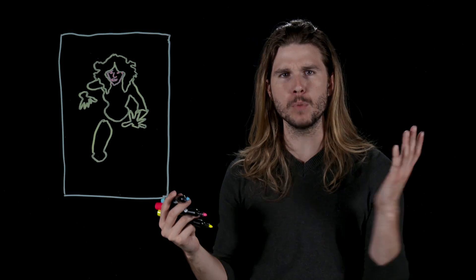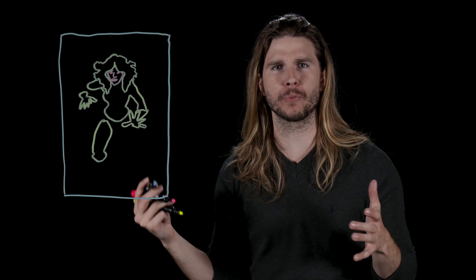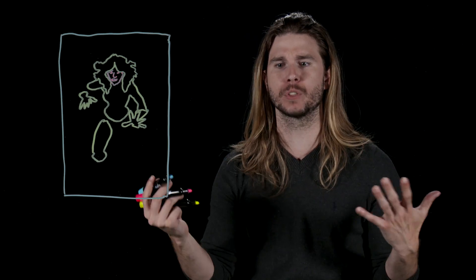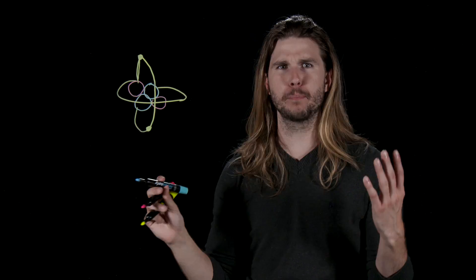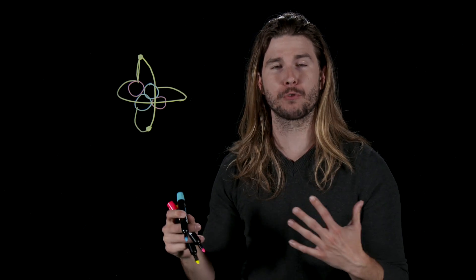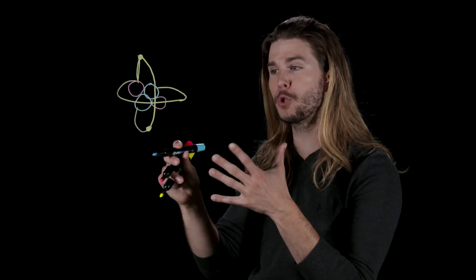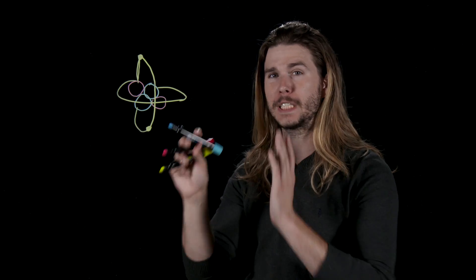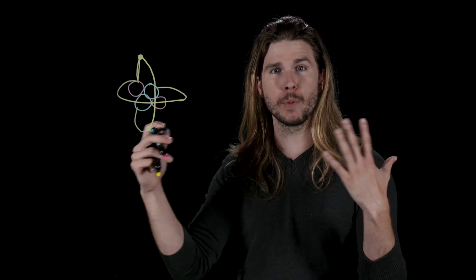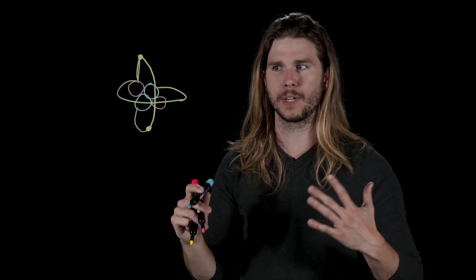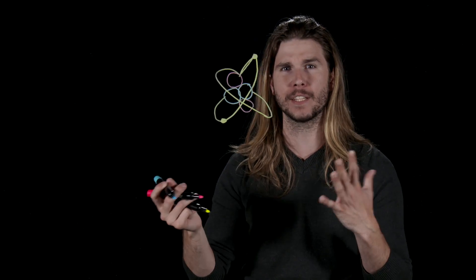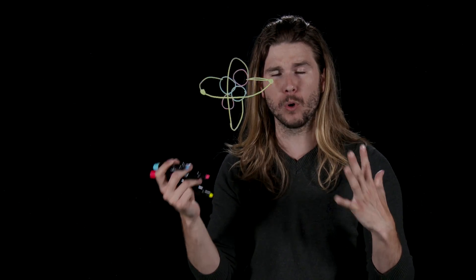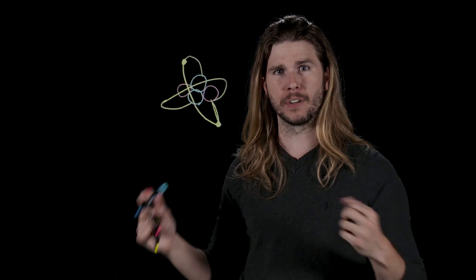Kitty Pryde wouldn't just be able to move her atoms through the spaces in between the atoms of another solid object, either. The reason why you can't just push two solids through each other comes from a balance between the repulsion of their electrons and the attraction from the van der Waals forces between those electrons. So even if you change the orientation of the atoms in the solid, you still have two solids that will ultimately repel each other and not pass through.